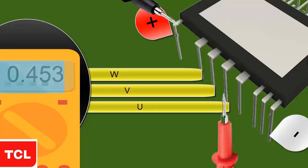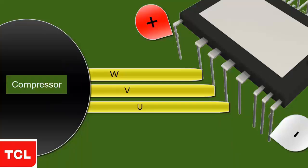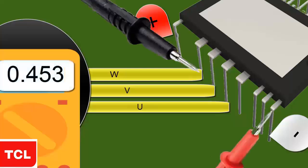Let's proceed with the integrity test of the last three diodes. Place the red probe of the multimeter on the negative input of the IPM electronic circuit. Use the black probe to measure the points UVW.